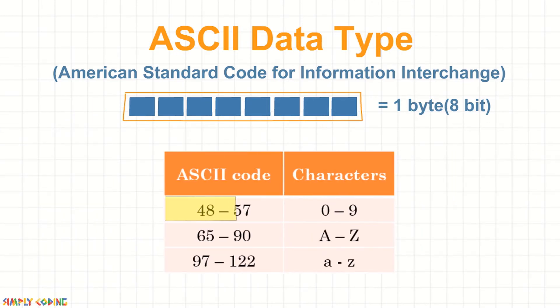48 to 57 represent numbers 0 to 9, 65 to 90 represent uppercase A to Z, and 97 to 122 represent lowercase A to Z.